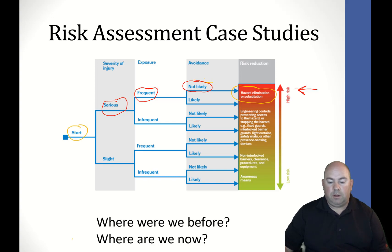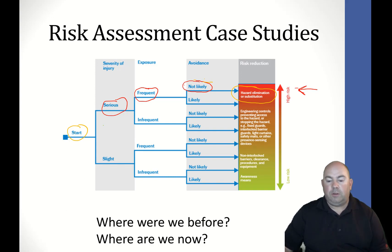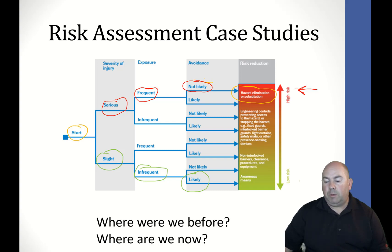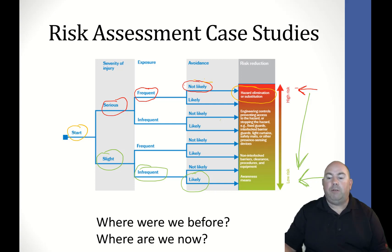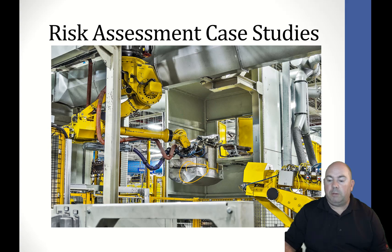So what have we done now? Severity of the injury — we are now using a robot. Robots don't get injured, so we're going to be slight. Exposure to humans is infrequent. Possibility of avoidance is probably likely — we'd only be talking about maintenance functions. So we are basically all the way down to the lowest risk level. Awareness means we could put up signs that say 'caution hot parts' if you go in there, and that would be sufficient. We successfully reduced risk from high all the way down to low by putting in a robot. That would be designing away risk by elimination or substitution.